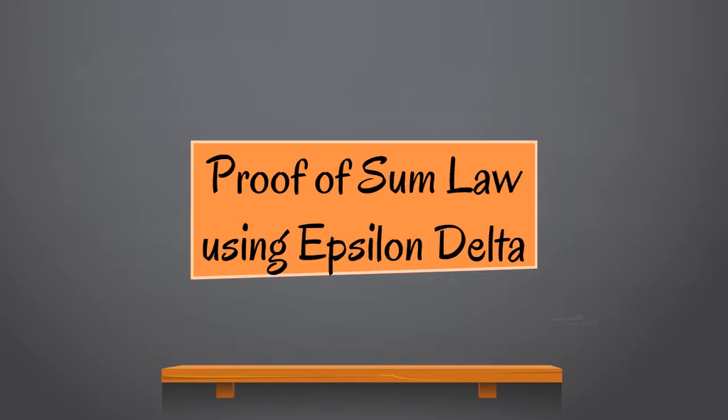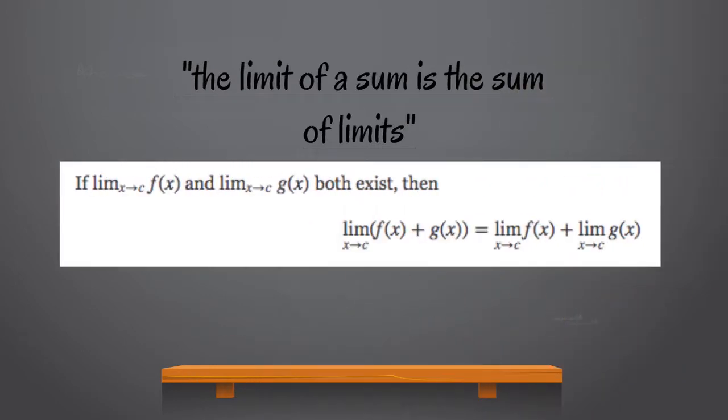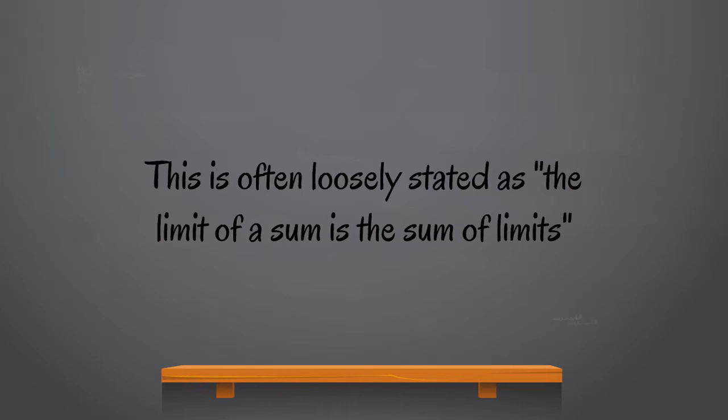And now, we will be moving on to the proof of the sum law for limits using epsilon delta. The sum law for limits states that if limit x approaching c f(x) and limit x approaching c g(x) both exist, then limit x approaching c [f(x) + g(x)] equals limit x approaching c f(x) plus limit x approaching c g(x). This is often loosely stated as the limit of a sum is the sum of limits.